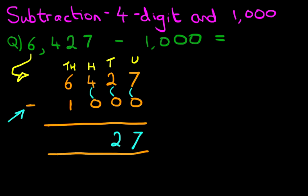The hundreds column, 4 minus 0. The answer is 4. And lastly, we do the thousands column, 6 minus 1. That's right, the answer is 5.